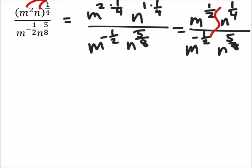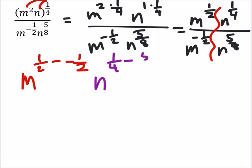So, if I split these up, then I've got m to the power of 1 half minus a negative 1 half, and then n to the power of 1 fourth minus 5 eighths. Now, the m isn't a problem, because then I've got 1 half plus 1 half, which would be 1, and we don't usually show the 1.